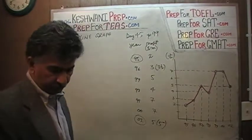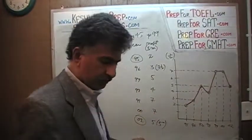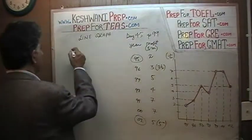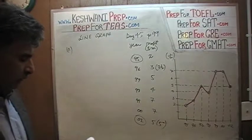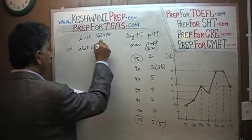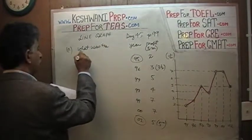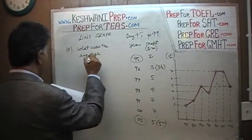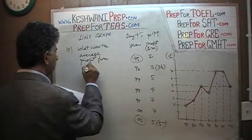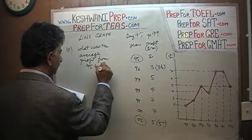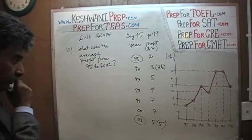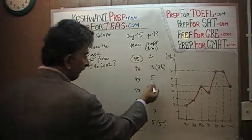I'm going to give you 3 questions. Let's call it Part A. Part A is: what was the average profit from 95 to 2001? Very straightforward question. In order for us to find the average profit, we have to add up all these figures here.